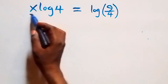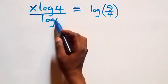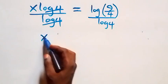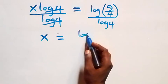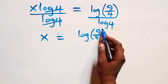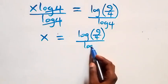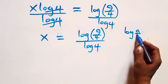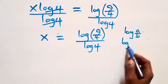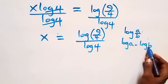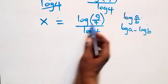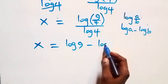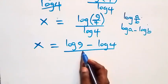Next we divide both sides by log 4 — divide this side by log 4 and also divide this side by log 4. The log 4s cancel each other, and we have x equals log(9/4) over log 4. From the quotient law of logarithms, log(a/b) is the same as log a minus log b. So this becomes x equals log 9 minus log 4, all over log 4.